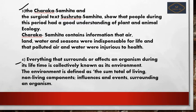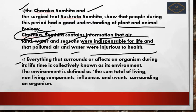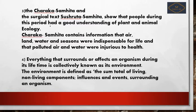Explanation for Question 3: The Charaka Samhita and the Sushruta Samhita show that people during that period had a good understanding of plants and animals. The Charaka Samhita contains information that air, land, water, and seasons were indispensable for life, and that polluted air and water were injurious to health — these are important facts to remember.